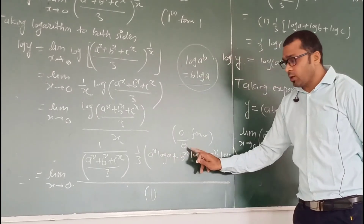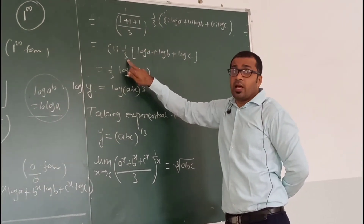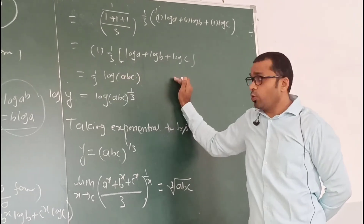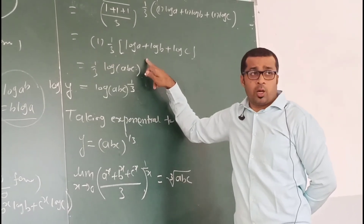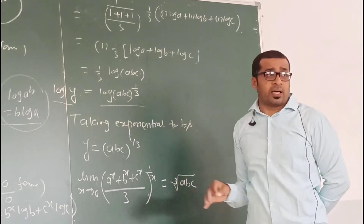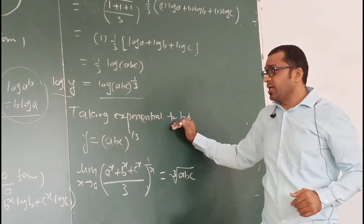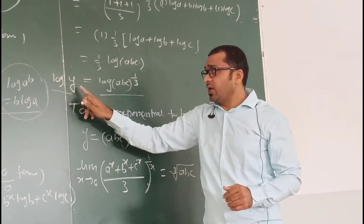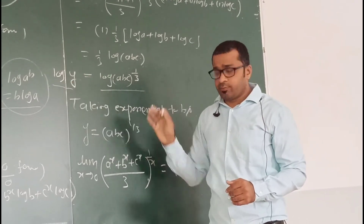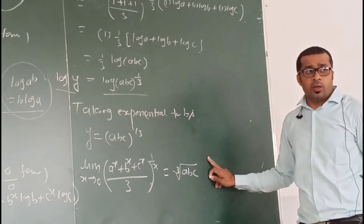We have log a + log b + log c multiplied by 1/3. Applying the logarithmic property, log a + log b + log c equals log(abc). Then applying the property again, 1/3 goes up as an exponent: this becomes log of (abc)^(1/3). So on the left we have log y = log of (abc)^(1/3). Taking exponential of both sides, e raised to log cancels, leaving y = (abc)^(1/3), which is the cube root of abc.